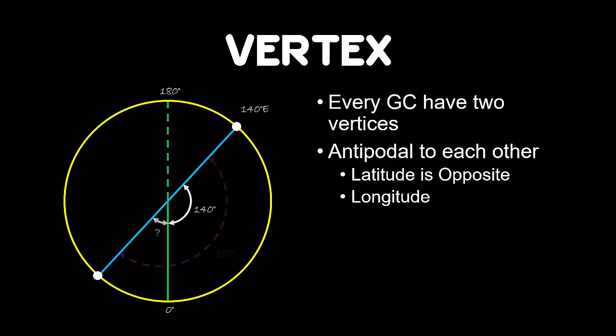We want to find the angle shown on the screen. If we subtract both values, we will be left with 40 degrees. Since it is west of prime meridian, the value will be 40 degrees west.